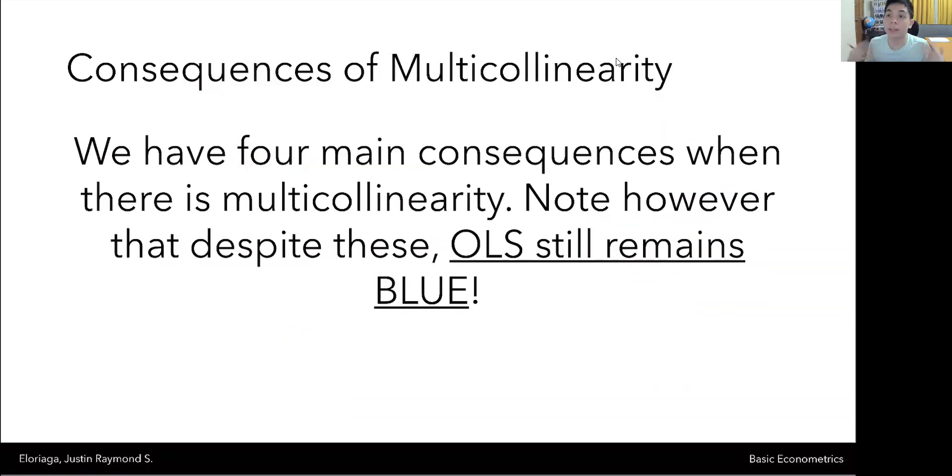So what are the consequences? Well, there are a couple. There are four that we will discuss in a succeeding video. But when these consequences are going to be discussed, we're going to know that OLS still remains the best linear and unbiased estimator in this case, however, with a few caveats and detriments. Okay, so that's a brief introduction to what multicollinearity is. In the next video, we're going to discuss the concept first of an auxiliary regression. And after that, we're going to discuss the consequences of multicollinearity. So thank you very much for your attention, and I'll see you in the next video.